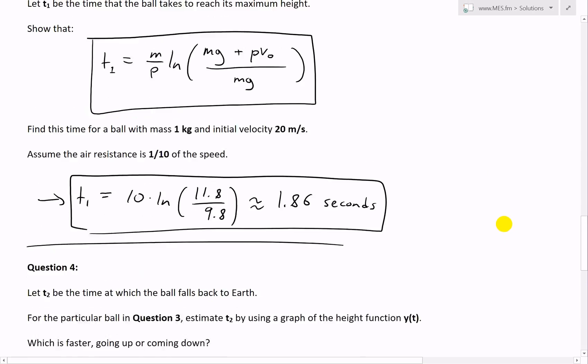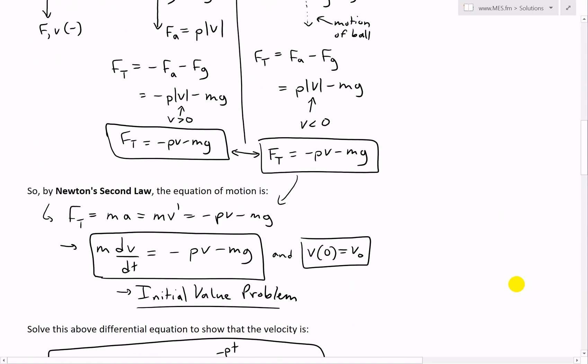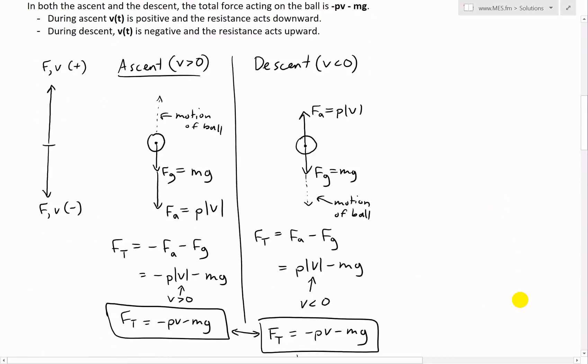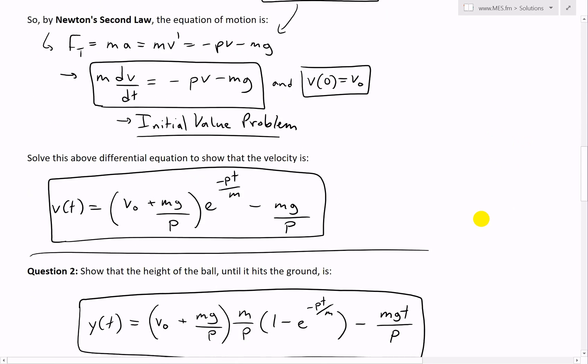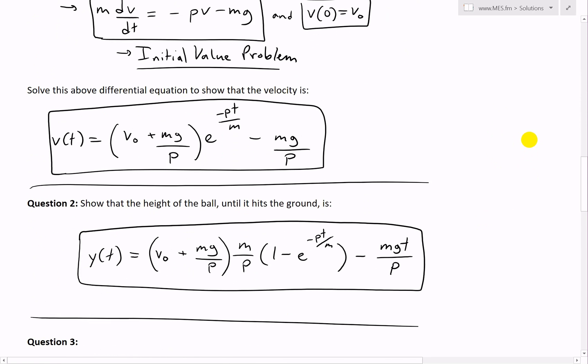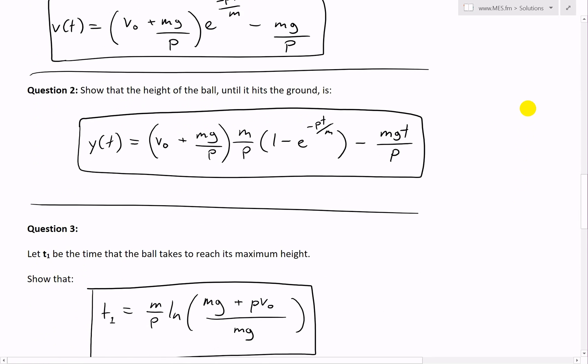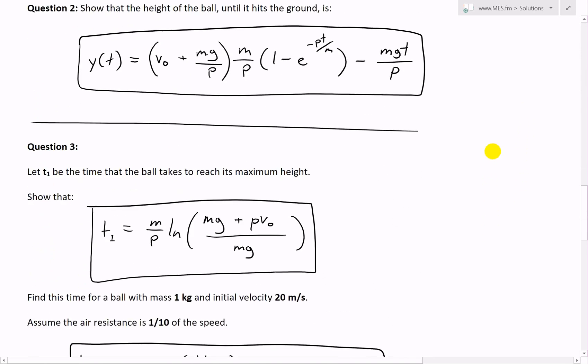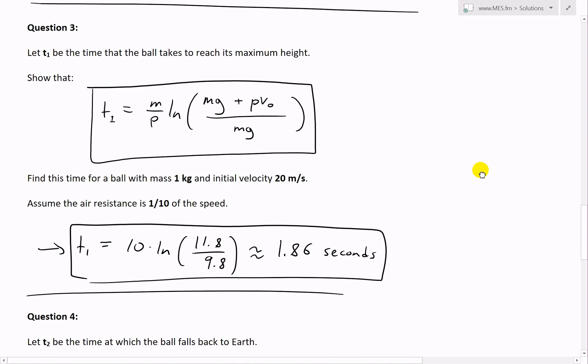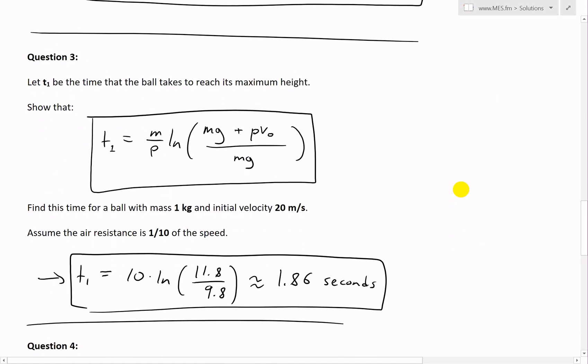Question one involved showing the governing differential equation of the motion of the ball and deriving the velocity equation as a function of time. Question two goes over the height of the ball equation as a function of time, y(t). And then question three involved finding the time it takes for the ball to reach its maximum height.